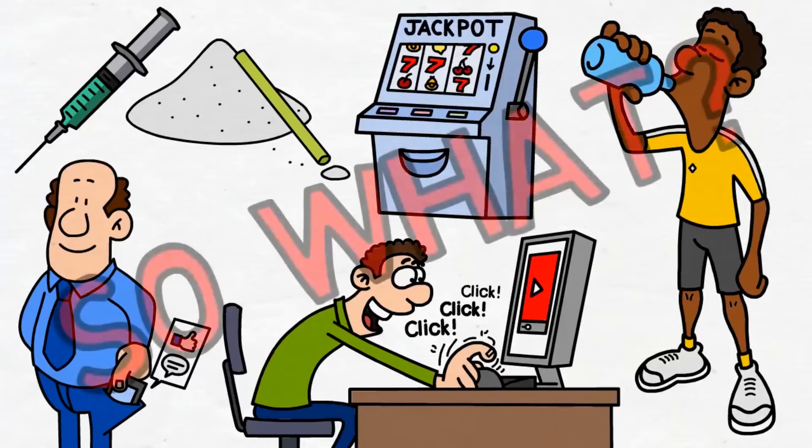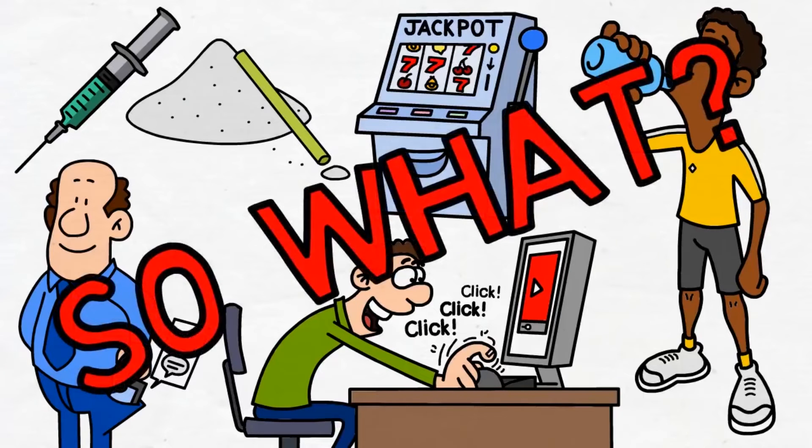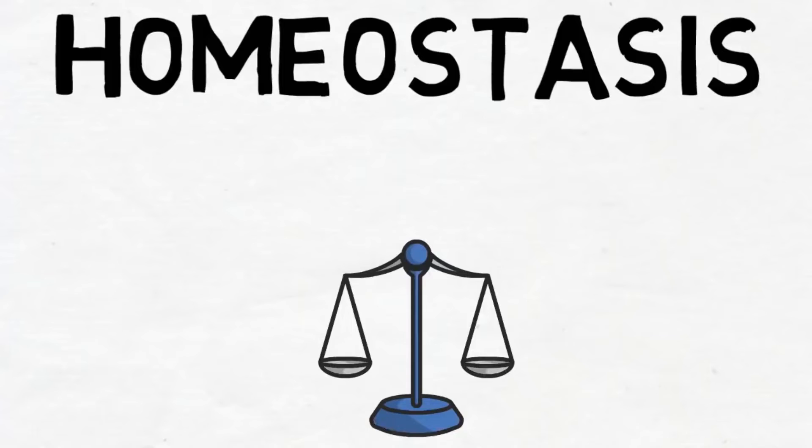And you might think, oh so what, it's not like it's harming me in any way. But you would be wrong. Our bodies have a biological system called homeostasis. It means that our body likes to keep internal physical and chemical conditions at a balanced level. Whenever an imbalance occurs, our body adapts to it.